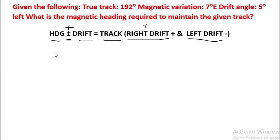Substituting the values given in this question, heading minus 5 because it is 5 degrees left, so we will use the minus sign, equals 192. This is going to be true heading because it is true track, so it equals 192.